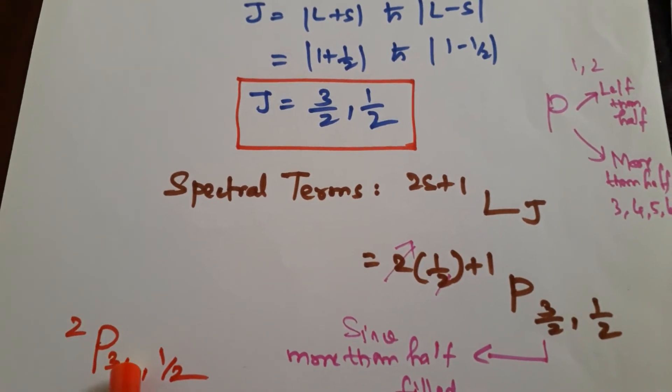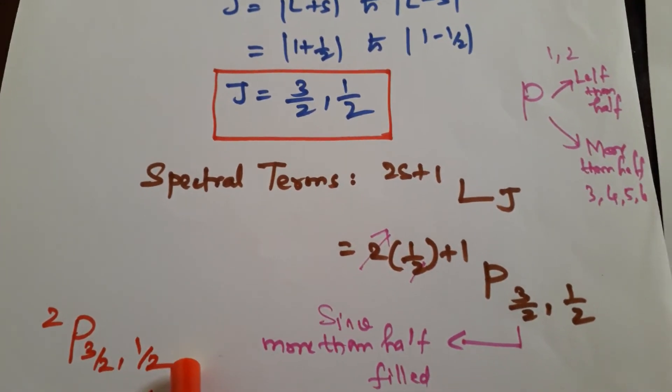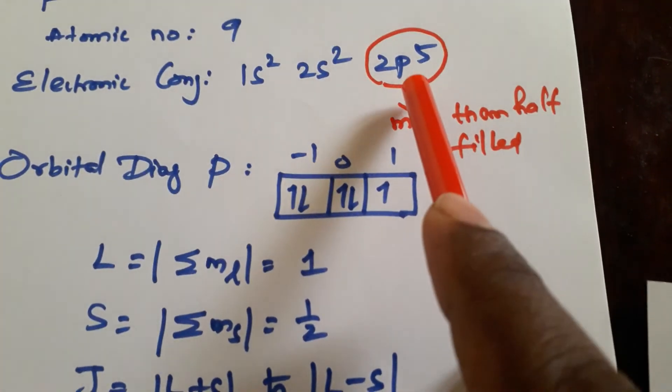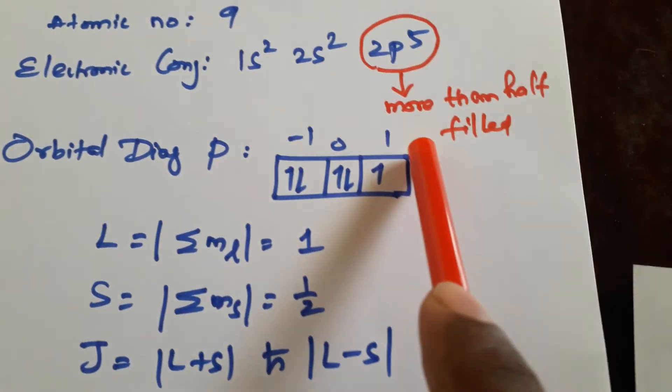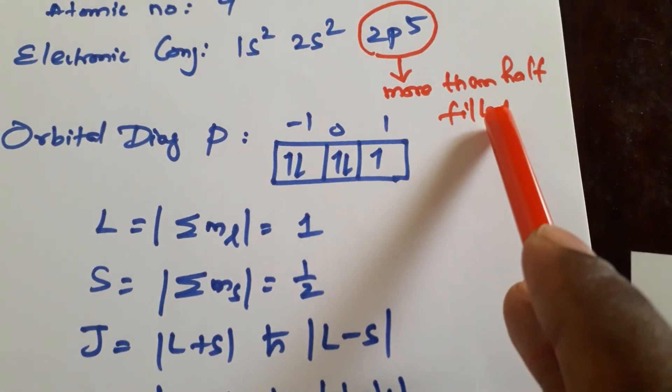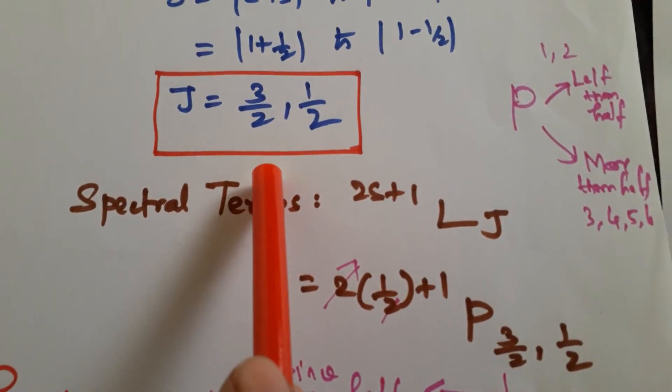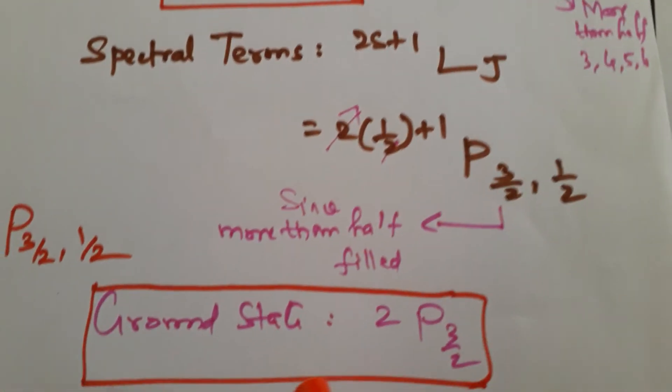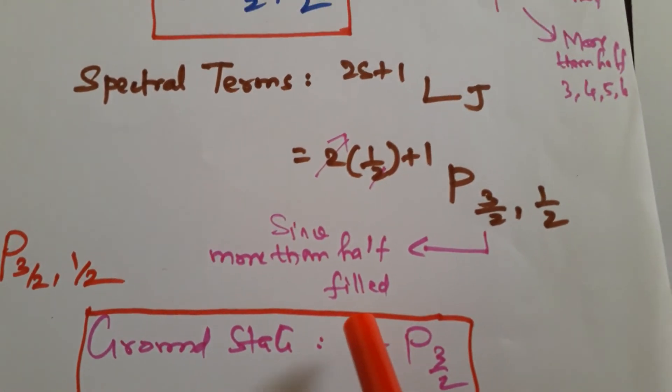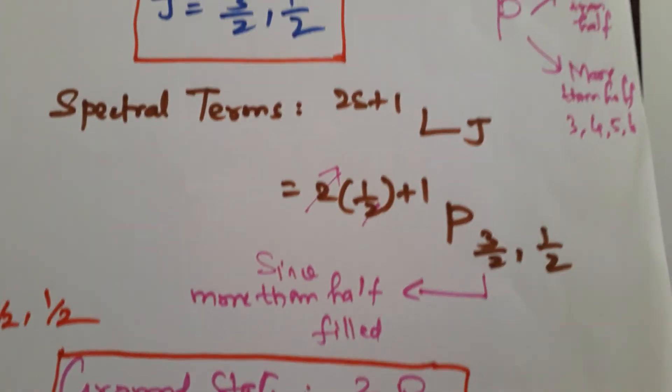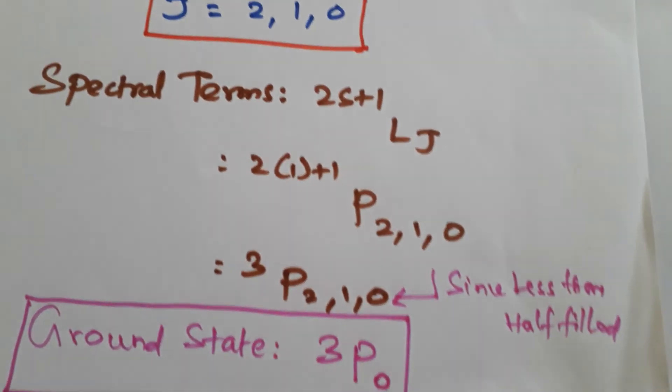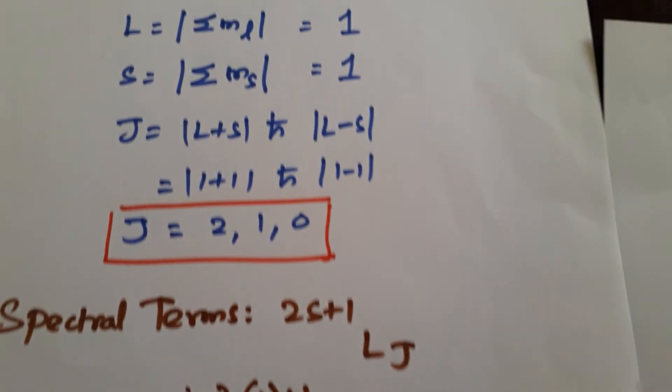Now which is the ground state? Whether 3/2 or 1/2. Now, as I said this, you know, if it is more than half-filled, if it is more than half-filled, we just take this highest J value. What is the highest J value? 3/2. So the ground state will be this: doublet P3/2. But in our previous example we have taken this 3P0, lowest value. So of course you understood that.